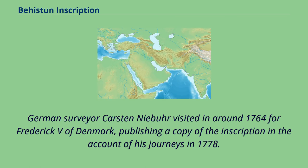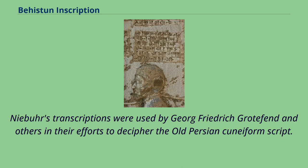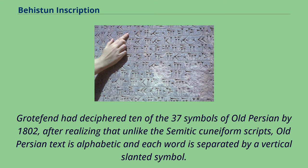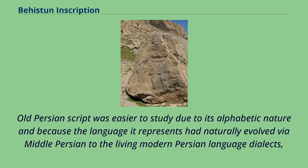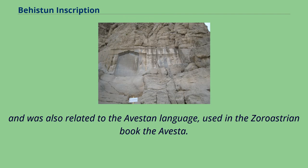German surveyor Carsten Niebuhr visited around 1764 for Frederick V of Denmark, publishing a copy of the inscription in the account of his journeys in 1778. Niebuhr's transcriptions were used by Georg Friedrich Grotefend and others in their efforts to decipher the Old Persian cuneiform script. Grotefend had deciphered 10 of the 37 symbols of Old Persian by 1802, after realizing that unlike the Semitic cuneiform scripts, Old Persian text is alphabetic and each word is separated by a vertical slanted symbol. Old Persian script was easier to study due to its alphabetic nature and because the language had naturally evolved via Middle Persian to the living modern Persian language dialects, and was also related to the Avestan language used in the Zoroastrian book The Avesta.